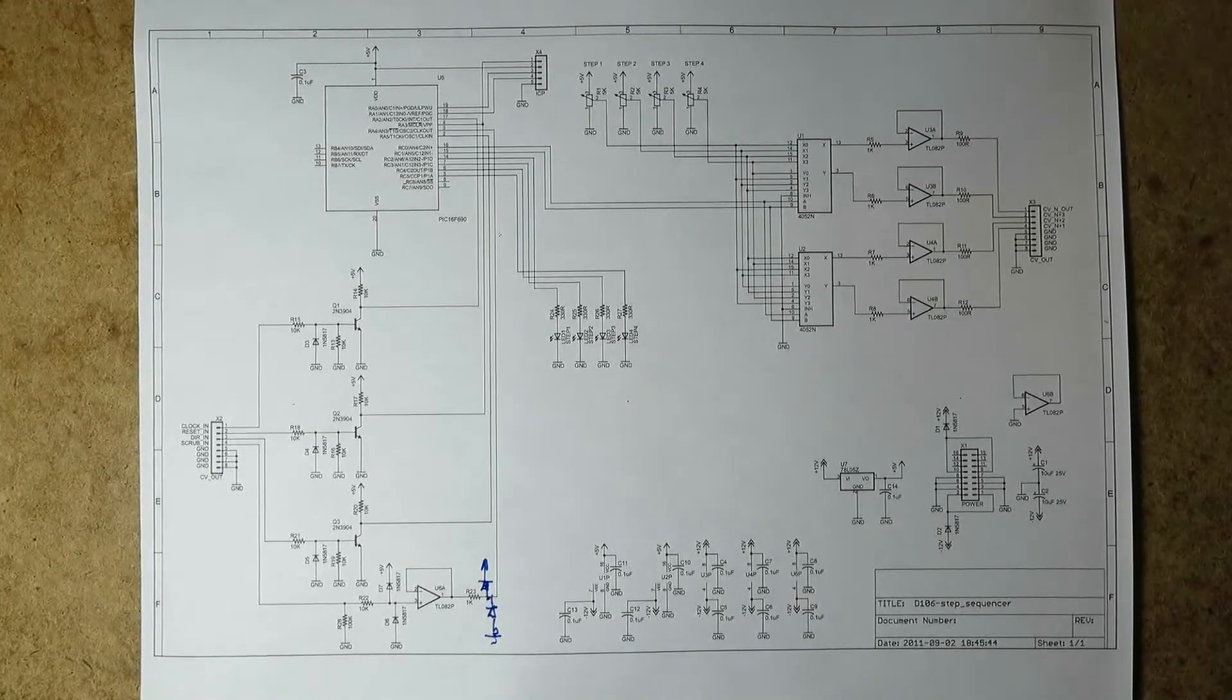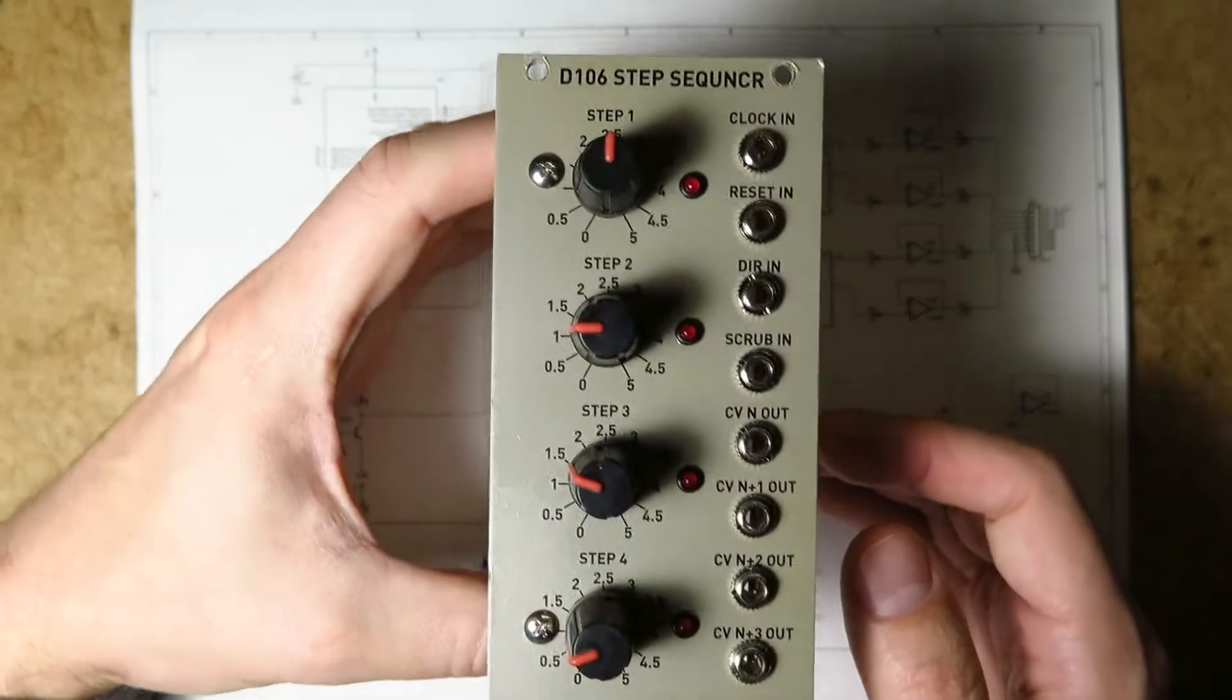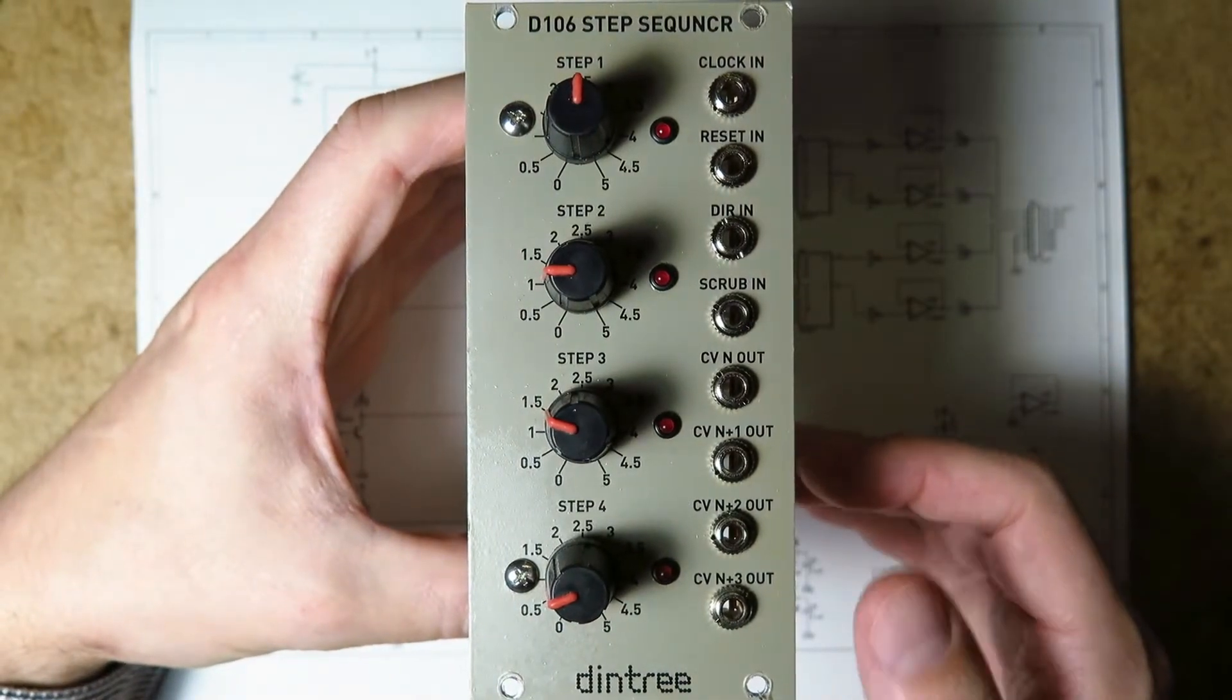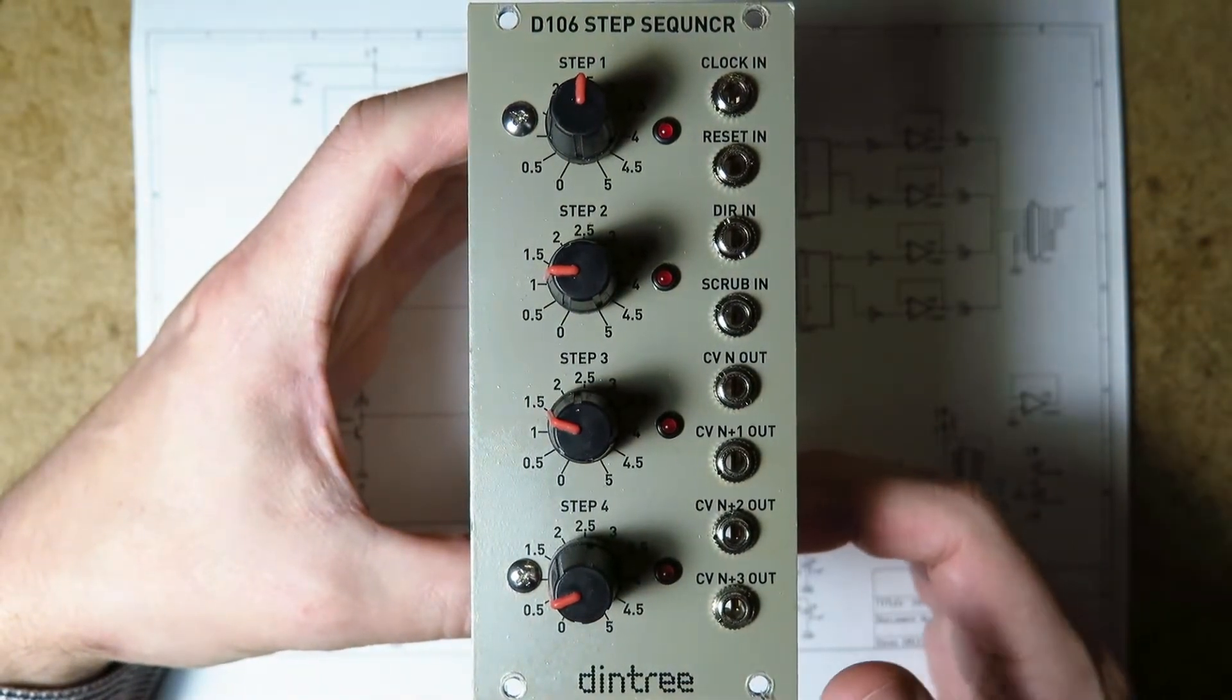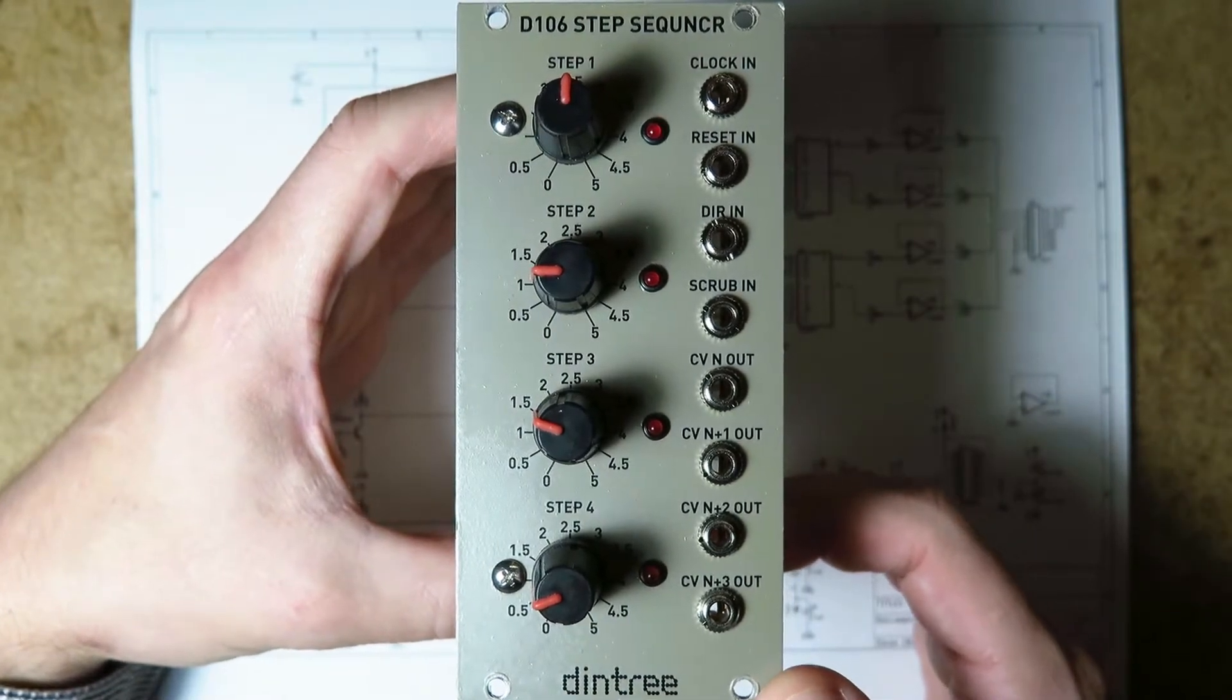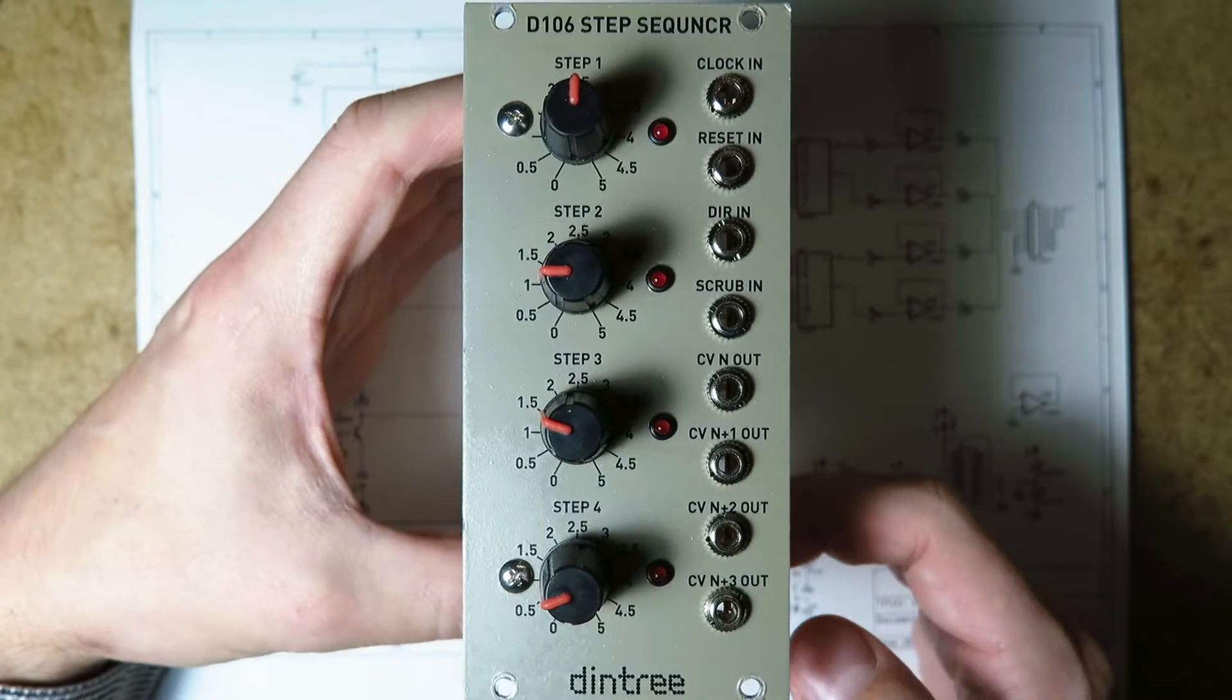Hi folks, it's Andrew here, and today I'd like to tell you about the D106 Step Sequencer. This is a little module that I made a few years ago, back in 2011, and it's part of my Dintree series. You can download free schematics and see more details on my website, dintree.com.